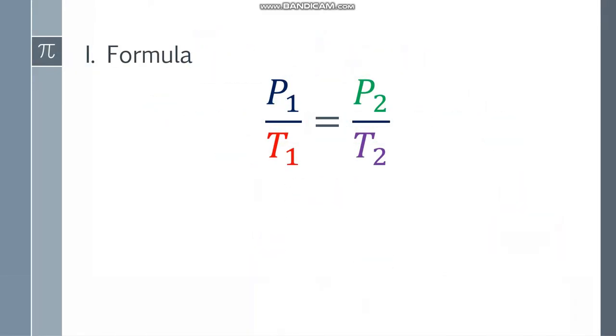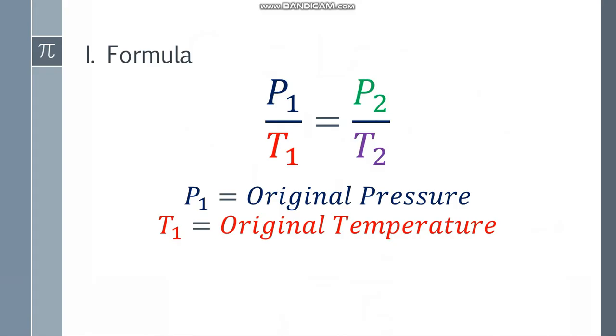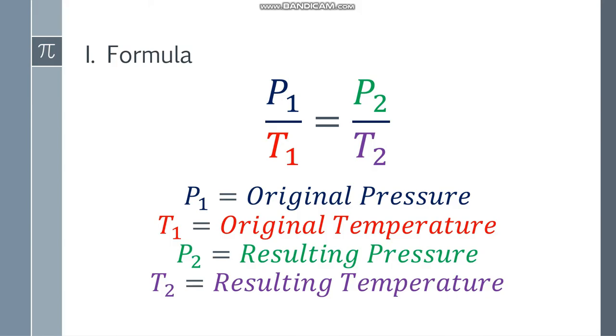So the formula we'll use for Gay-Lussac's Law is P1 over T1 equals P2 over T2. P1 is the original pressure, T1 is the original temperature, P2 is the resulting pressure, and T2 is the resulting temperature.